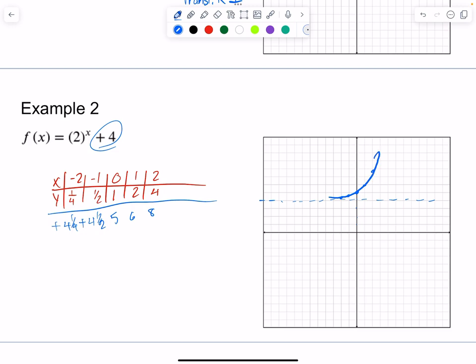So my asymptote is now y equals 4, which means my range is y is greater than 4. My domain is still all reals. My translation was up 4. So the k value shifts up or down. The k value, nicely enough, shifts up and down with what the sign is. And we've kind of seen this before in vertex form.